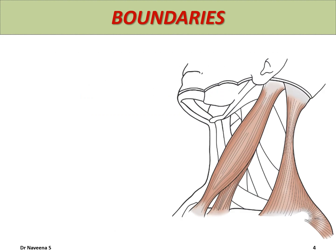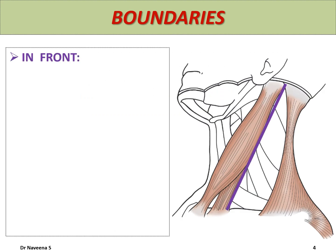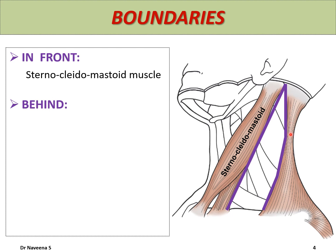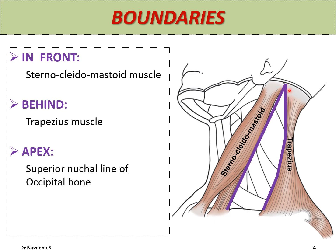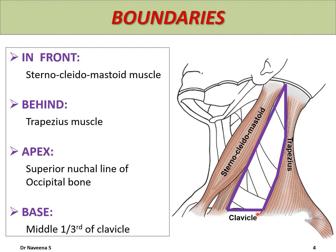The posterior triangle of the neck presents the following boundaries. In front, it is bounded by the posterior border of the sternocleidomastoid muscle. Behind, it is bounded by the anterior border of the trapezius muscle. The apex lies above where the two muscles meet at the superior nuchal line of the occipital bone. The base lies below, formed by the middle one-third of the clavicle, which acts as an anatomical barrier between the posterior triangle and axilla — contents of the posterior triangle pass deep to the clavicle to enter into the axilla.